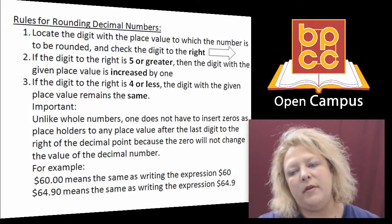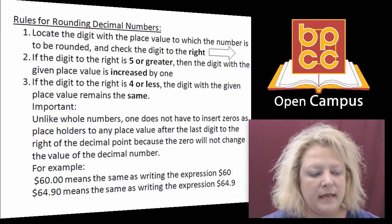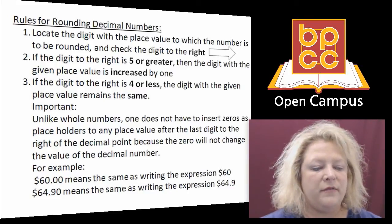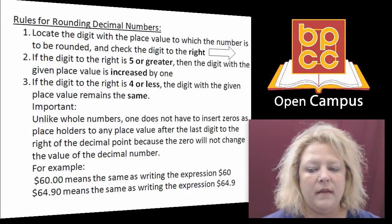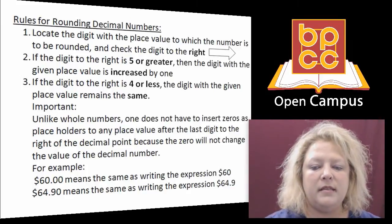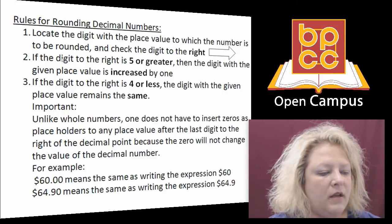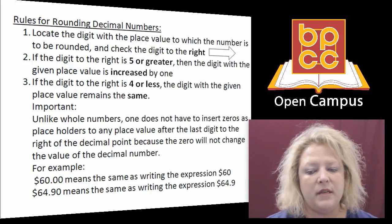If you look at this slide I have up on the screen, it tells you what to do. It says you locate the digit to the right of where you're going to round. If the digit is five or higher, you round up. If it's four or less, the place value stays the same. Unlike whole numbers, you do not have to insert zeros to place values. When you're done rounding, you can just cut the rest of them off — you don't have to put zeros in there.